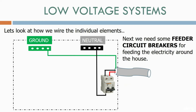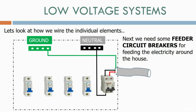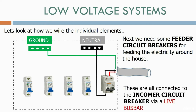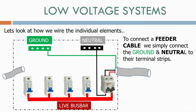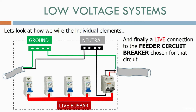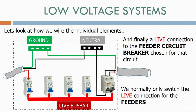Next we need some feeder circuit breakers feeding the electricity around the house. These are all connected to the incomer circuit breaker via the live bus bar. To connect a feeder cable, we simply connect the ground and neutral to their terminal strips, and finally a live connection to the feeder circuit breaker chosen for that circuit. We normally only switch the live connection for feeders.